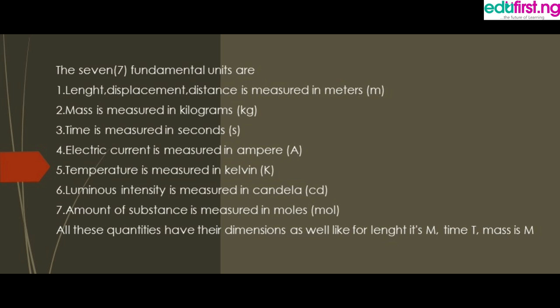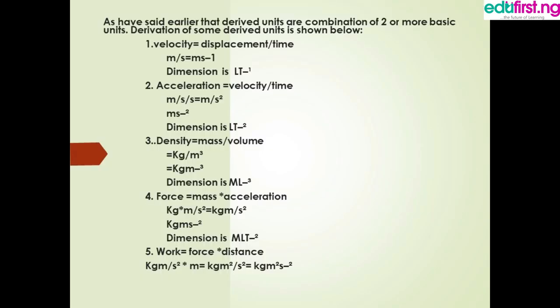Now, let's explain how we can combine two or more fundamental units to give us one derived unit. We continue with the derivation of derived units. The first one: velocity. The formula for velocity is displacement over time. Displacement is measured in meters and time in seconds. So meter divided by seconds equals meter per second. The unit for velocity is meter per second.